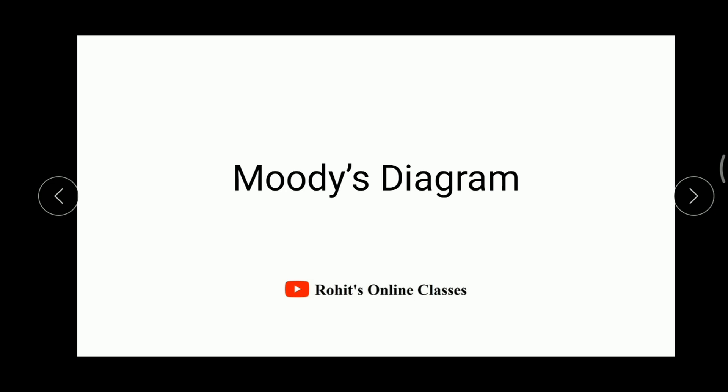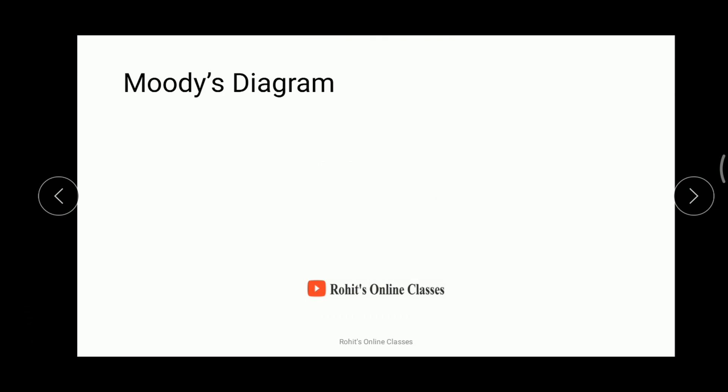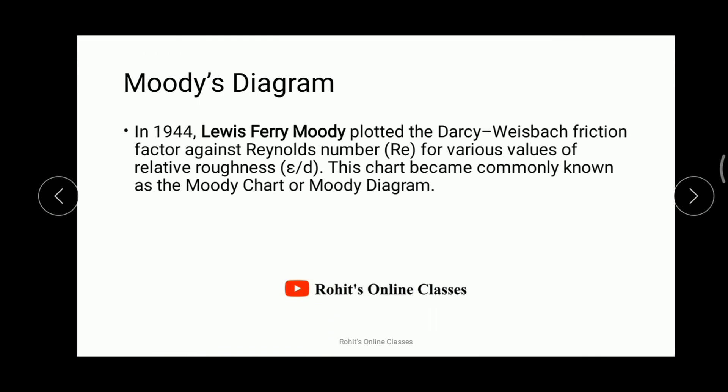Moody's diagram is a representation — a graph plotted between the Reynolds number, the friction factor, and the roughness or relative roughness of the pipe surface. In 1944, Lewis Ferry Moody plotted the Darcy-Weisbach friction factor against the Reynolds number for various values of relative roughness, that is epsilon divided by D.